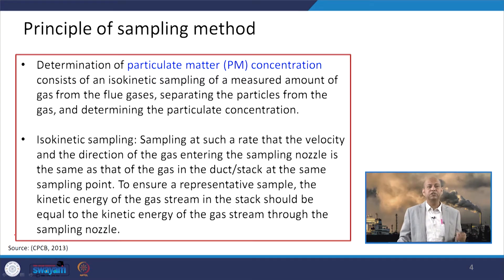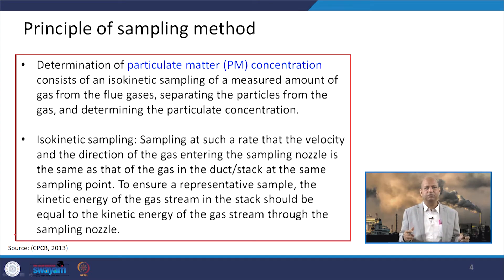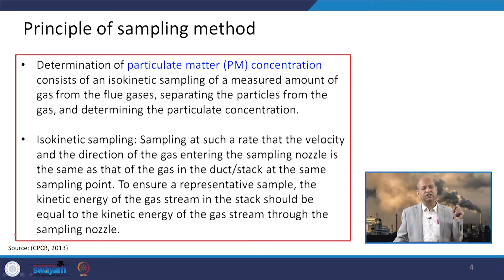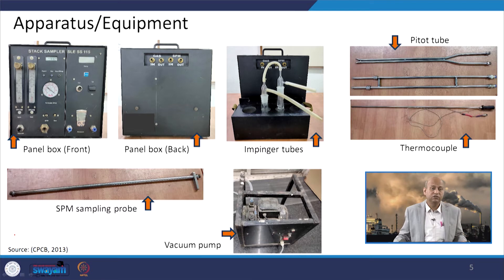The principle of the sampling method for particulate matter monitoring is basically the isokinetic sampling method, which is given a lot of emphasis. In this method, we have to ensure that the velocity, temperature, and other parameters at the nozzle used for extracting the sample are the same as those in the stack. The velocity, flow rate, and all kinetic parameters going into the probe or nozzle must match those in the entire stack — that is the fundamental isokinetic requirement.